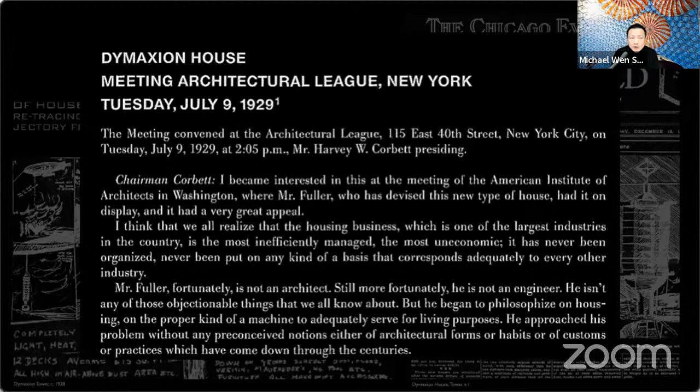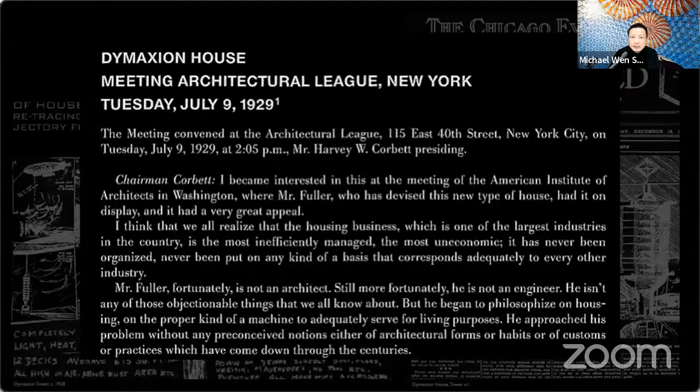In 1929, Fuller was already exploring these ideas, making a presentation to the Architectural League of New York. The introduction to Fuller is still emblematic: 'Mr. Fuller unfortunately is not an architect, and still more fortunately he's not an engineer — so because of that he can think much more freely to think about a proper kind of machine to adequately serve for living purposes.' This is the connection to Le Corbusier's use of the word 'machine' in architectural design.